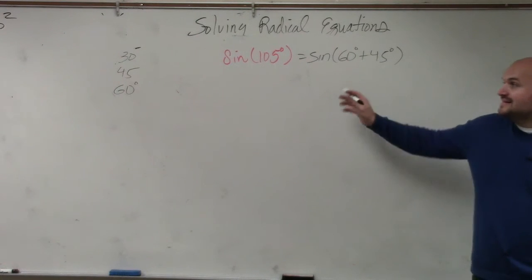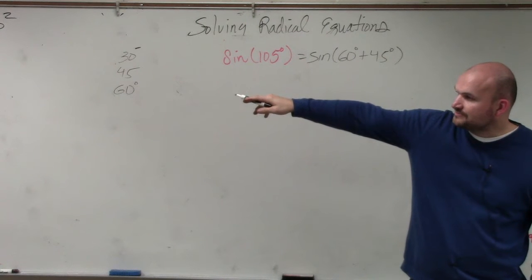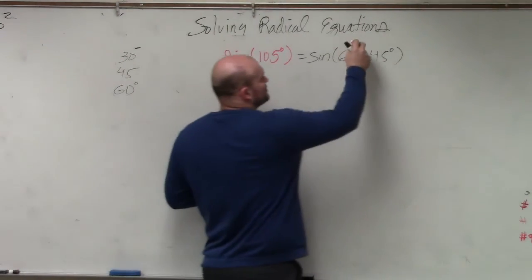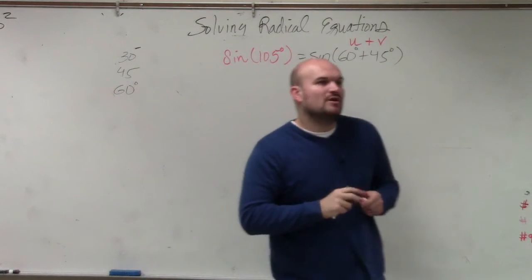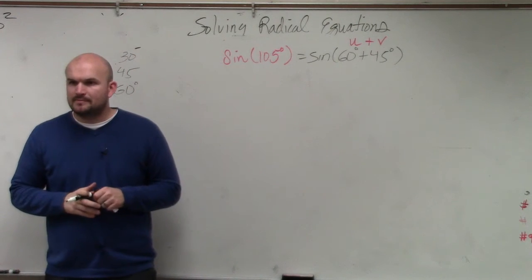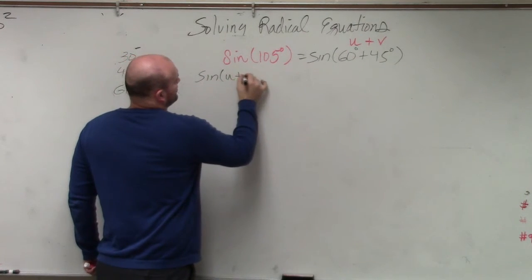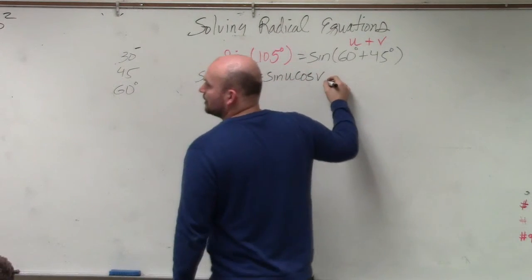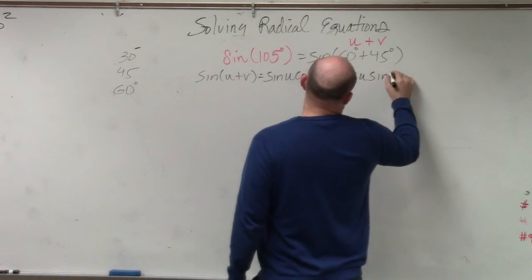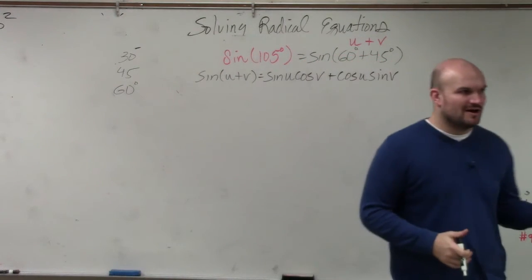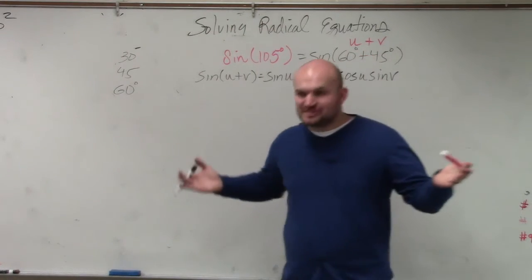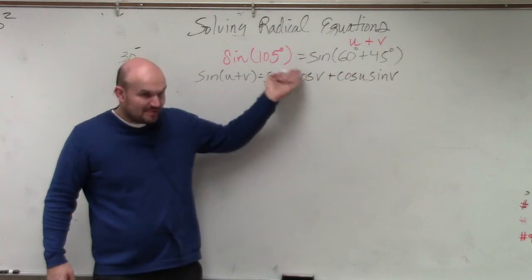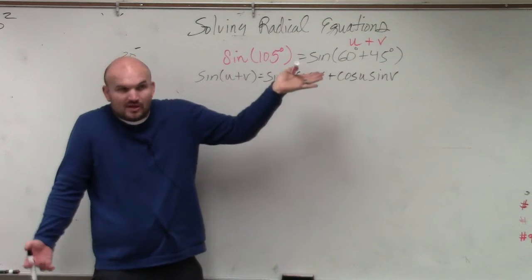We have sine of 60 degrees plus 45 degrees. Now we can look at our sum and difference formula. The sum formula says when you have the sine of u plus v, u and v represent the two angles that you're adding. So u is going to be 60 and v is going to be 45. The sine of u plus v is simply sine of u cosine of v plus cosine of u sine of v. What's nice about these problems compared to what you've been doing? These are much more cut and dry. Here's the formula—you find what angles u and v are, plug them into the formula, and solve.